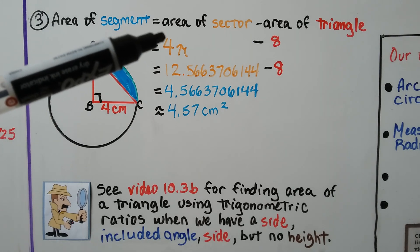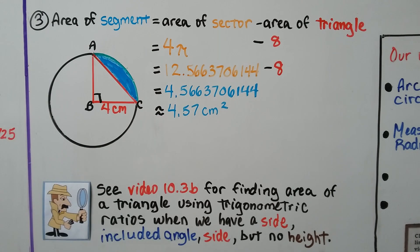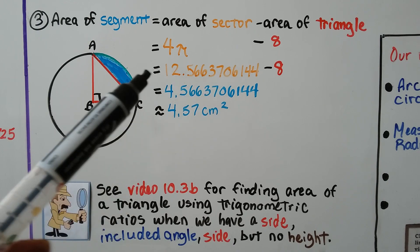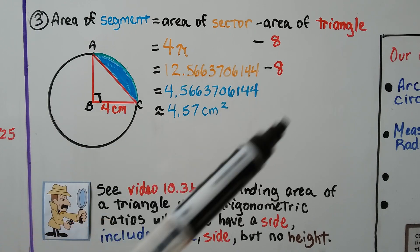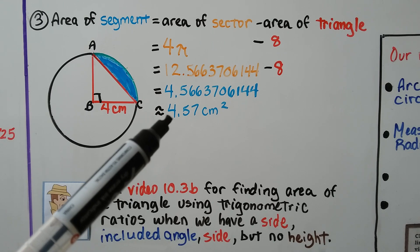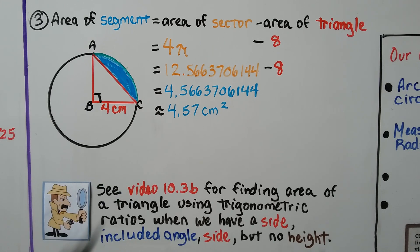We know the area of the sector is 4 pi. We know the area of the triangle is 8. We do our subtraction. We get this nice long decimal and it comes out that the area of the segment is approximately 4.57 centimeters squared.